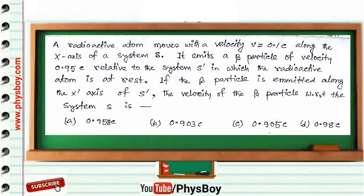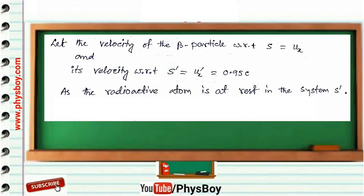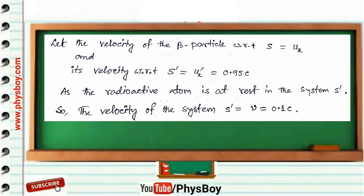Next question: a radioactive atom moves with velocity v = 0.1c along the x-axis of system S. It emits a beta particle of velocity 0.95c relative to system S', in which the radioactive atom is at rest. If the beta particle is emitted along the x'-axis of S', the velocity of the beta particle with respect to system S is: Option A: 0.958c, Option B: 0.903c, Option C: 0.905c, Option D: 0.98c. Let uₓ be the velocity of the beta particle in S, and uₓ' = 0.95c in S'.